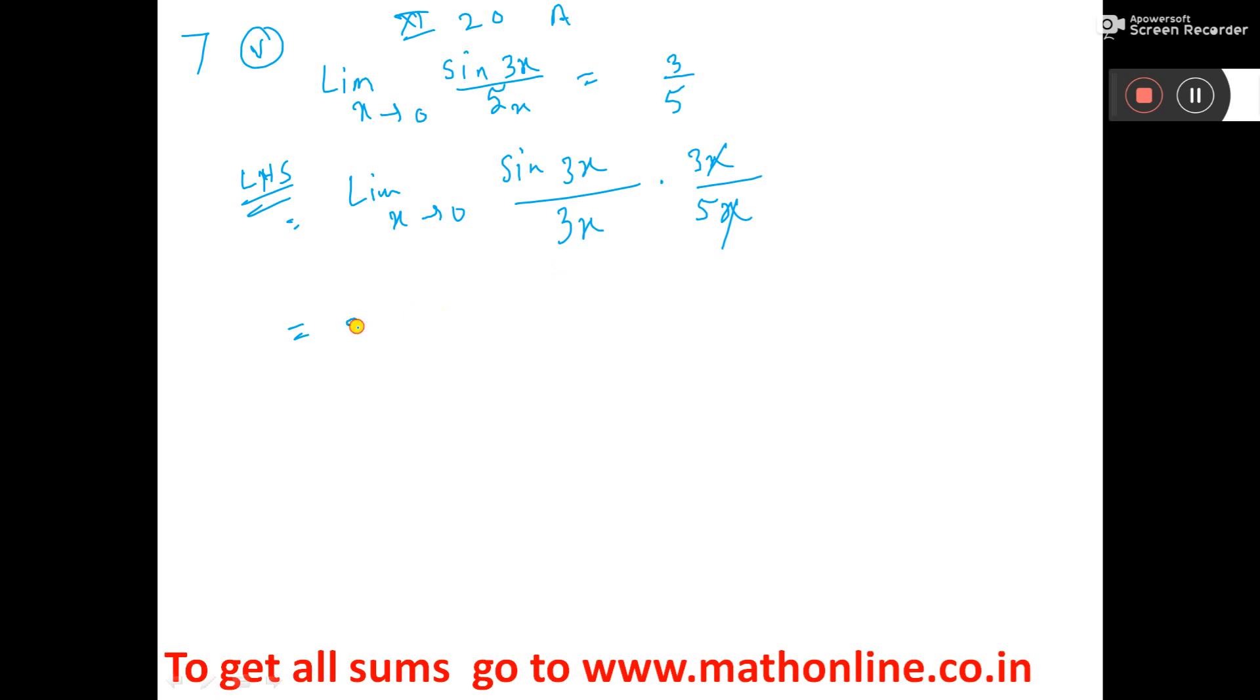This 3 by 5 is coming out of the limit because constant can come out. So limit x tends to 0 sin 3x by 3x.